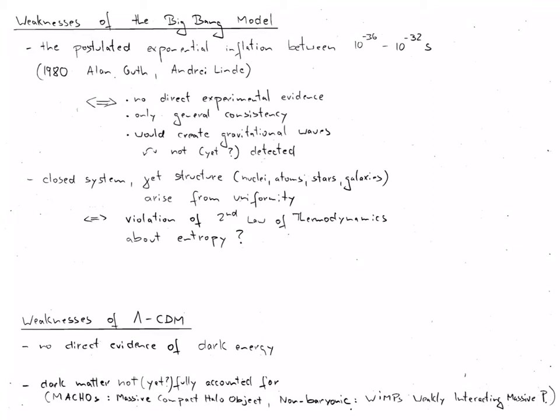The extension of the Big Bang model, namely the Lambda CDM model, has in particular the weakness that there is no direct evidence for dark energy. Similarly, no direct evidence has yet been found for dark matter, although several objects are proposed. In fact, some dark matter, massive compact halo objects have been found. However, they cannot account for the amount of dark matter necessary to explain the astrophysical observations. Therefore, other objects, for example, WIMPs, so-called weakly interacting massive particles, have been proposed to exist, and there are experiments underway to possibly detect them. It remains to be seen if further evidence can be accumulated to underpin our understanding of the history of our universe.